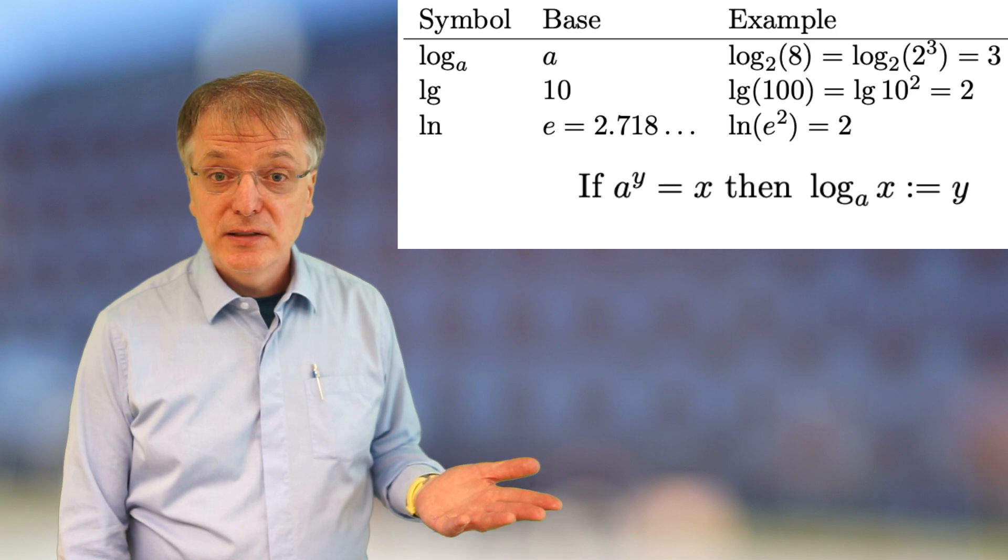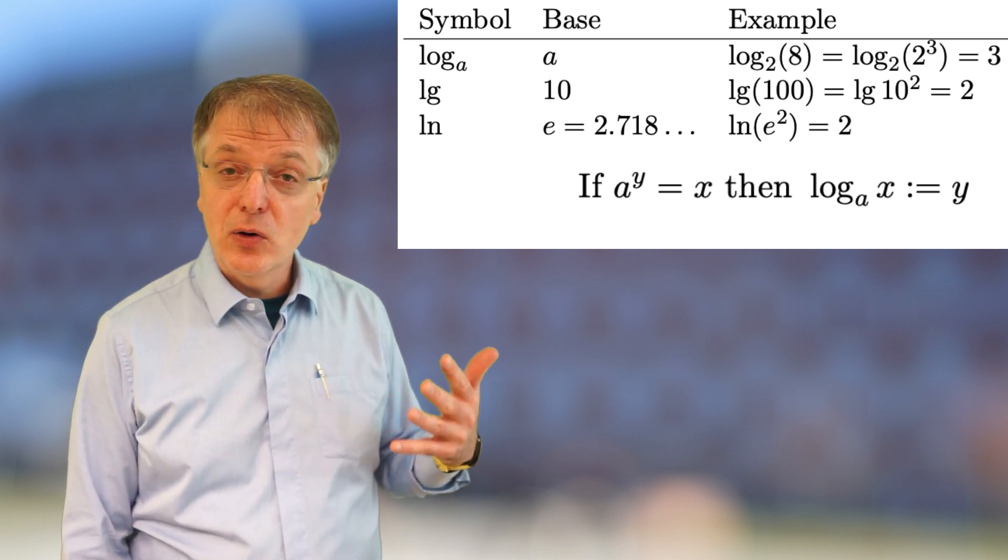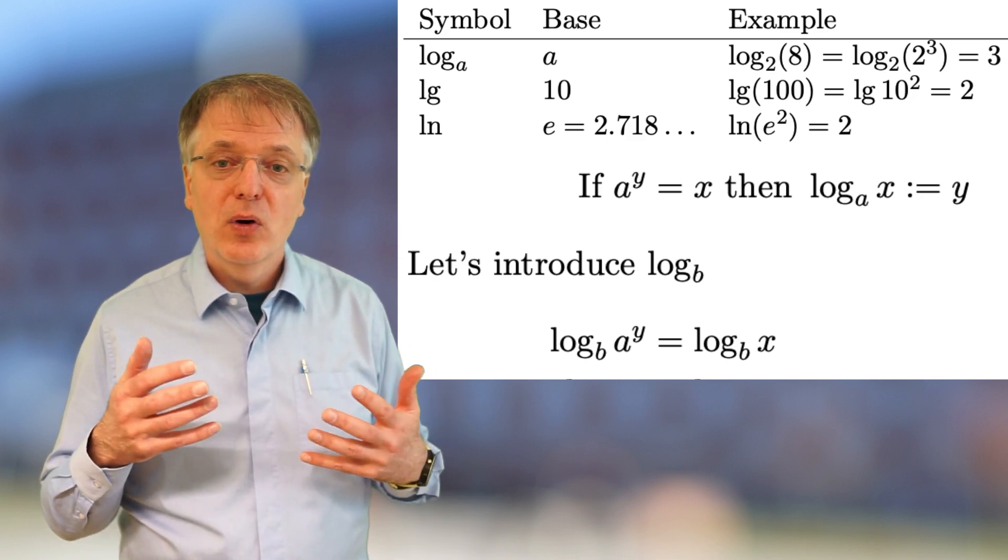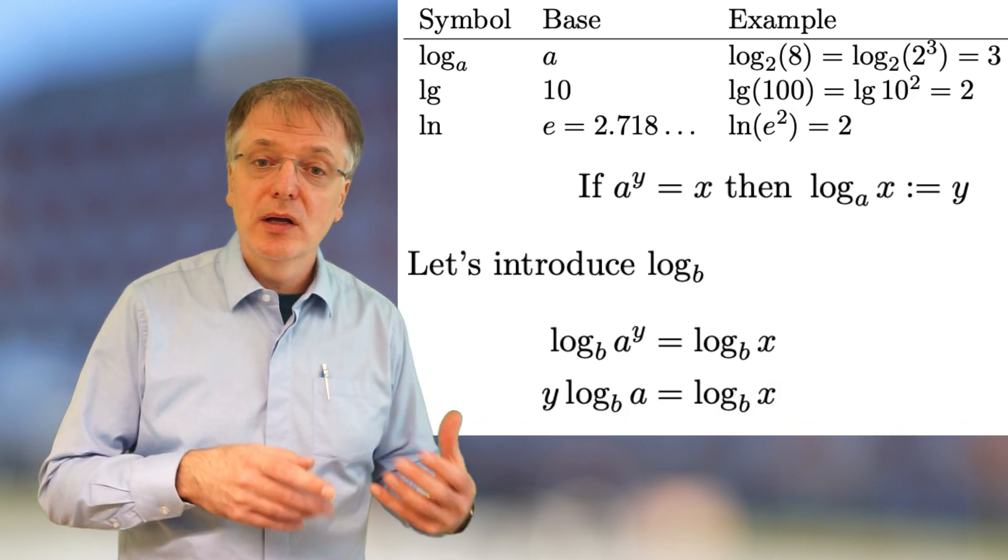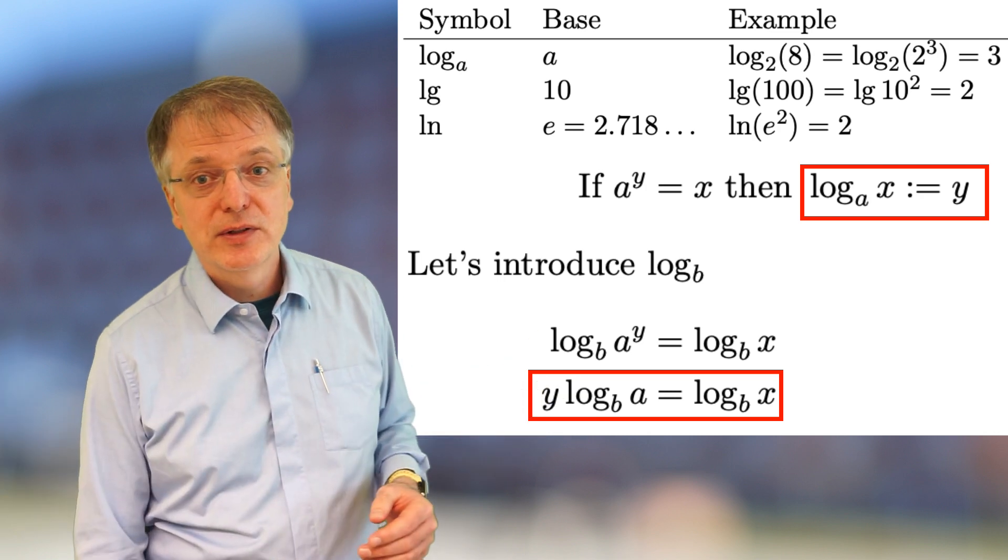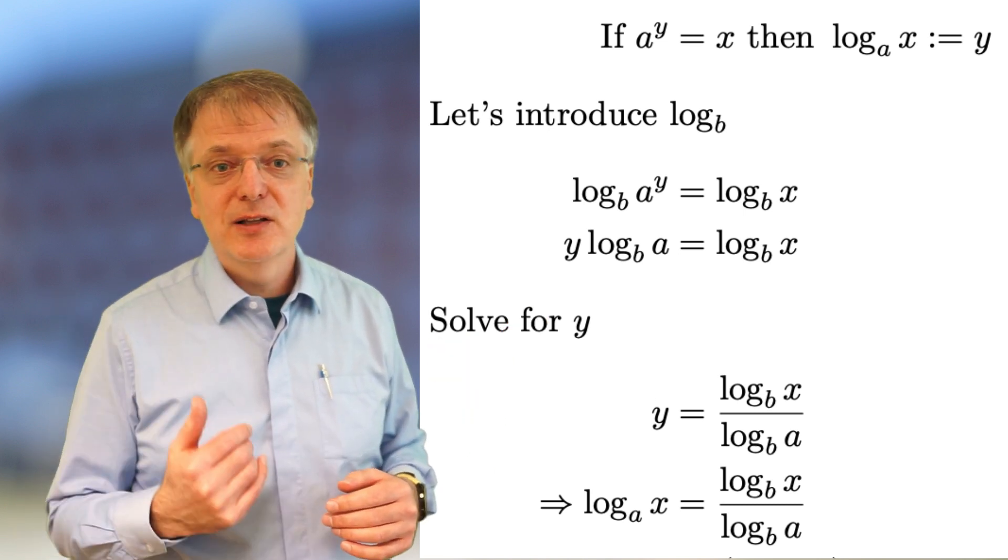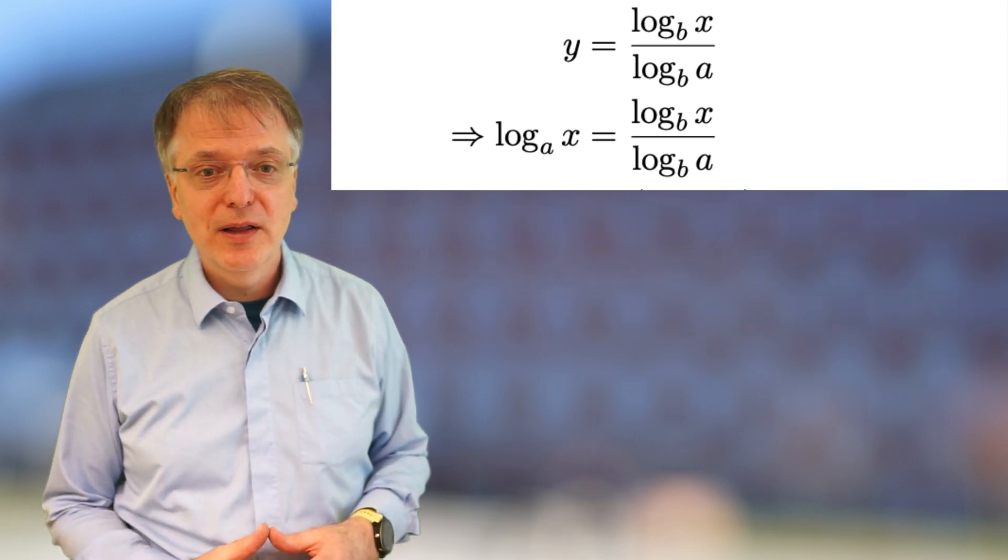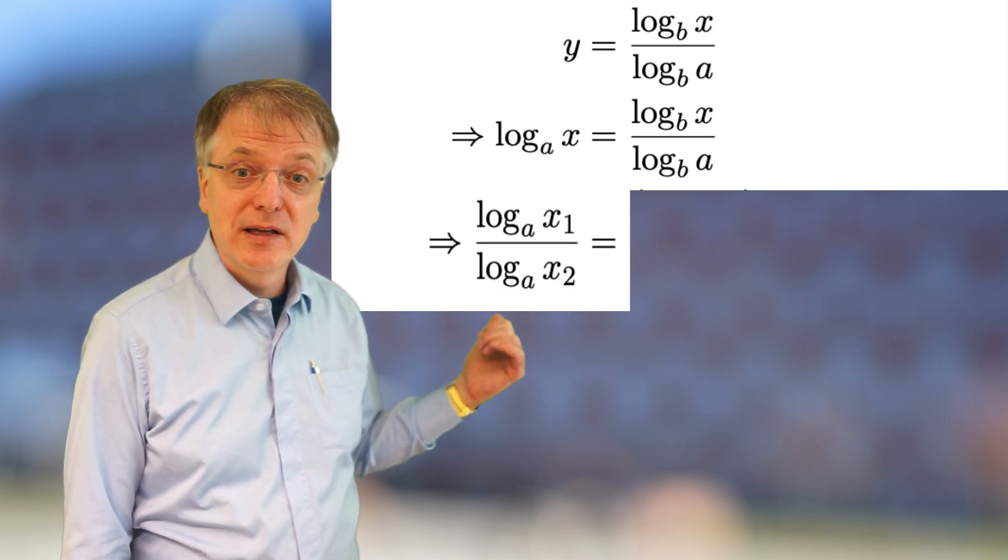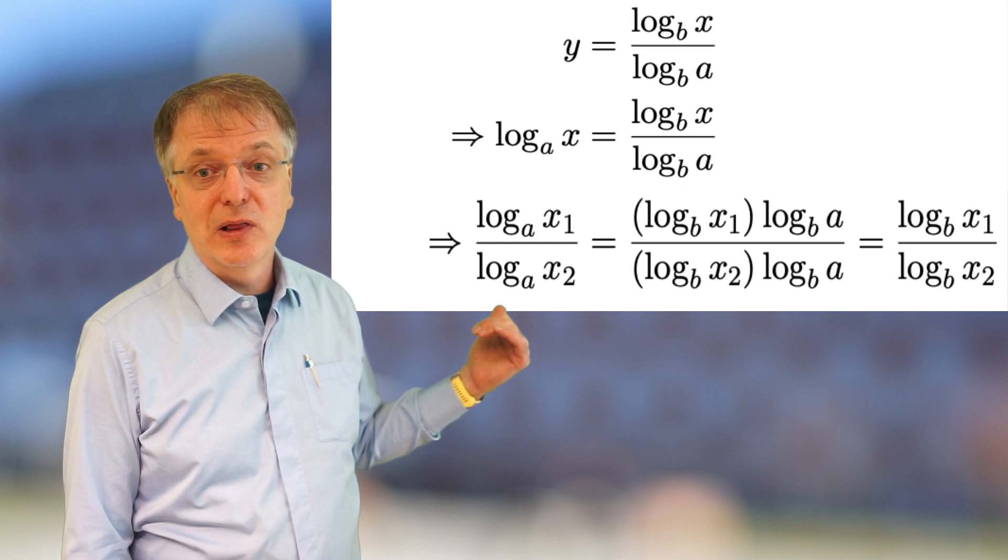If a to the power of y equals x, then by definition the logarithm base a of x equals y. Let us now introduce the logarithm with base b and take the logarithm of both sides. The way logarithm works, if you take the logarithm of a to the power of y, that is the same as multiplying y with the logarithm of a. But now we have two ways to express our variable y, so let us solve for y and put them equal each other. We get that the logarithm base a of x equals the logarithm base b of x divided with logarithm base b of a, so we have a way to shift from one to the other. So, if we take the log base a of a value x1 and divide that with log base a of x2, we must then get the same result as when dividing log base b of x1 with log base b of x2.